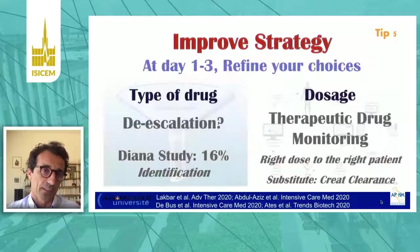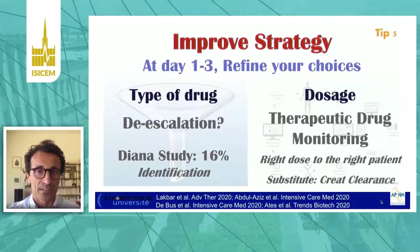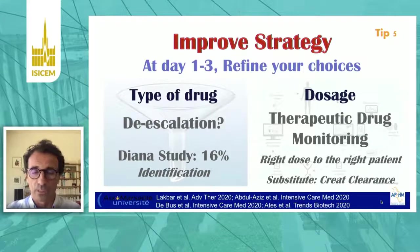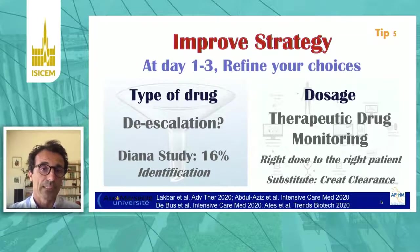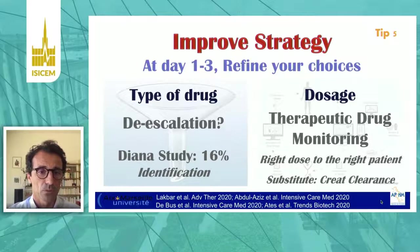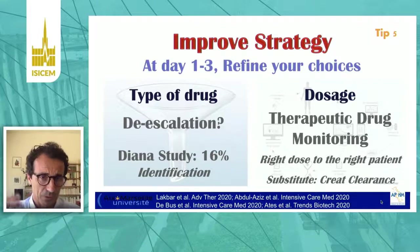Tip five is very classical: at day one or day three, refine your choice. You can start antibiotics when you don't know, because it can be life-saving for your patient, but you can be wrong. Everybody can be wrong. We have to reassess at day two or day three as soon as we have results from the lab, choosing the best drugs — usually those with the narrower spectrum. You have to use de-escalation. This is not done very well: a study by the group of Jan de Vail shows that only 16% of antibiotics were de-escalated. There is room for improvement, and the key point is identification of the bacteria.